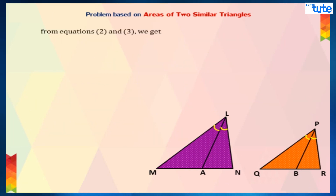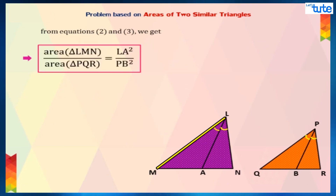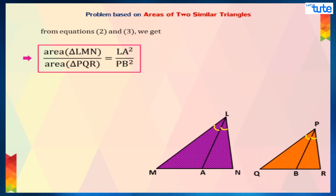Now, on comparing equation 2 with equation 3, we can see that LM square upon PQ square is equal to LA square upon PB square. So, we can conclude that the area of triangle LMN upon area of triangle PQR equals to LA square upon PB square.